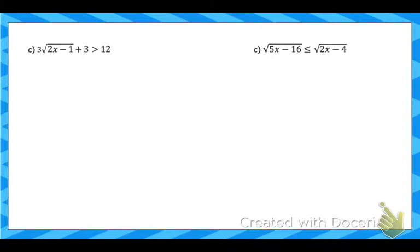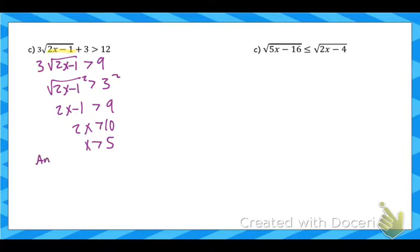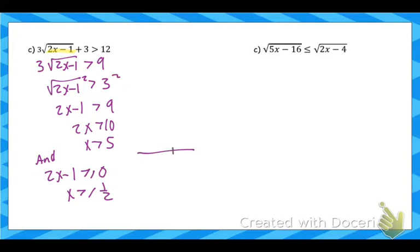Let's try a couple more. Get the square root by itself — note this is 3 times the square root, not a cube root — then square both sides to get the inequality solution. Also find the domain by setting whatever is under the root greater than or equal to 0, giving x greater than or equal to 1/2. If x is greater than 5, it's also automatically greater than 1/2, so the domain is contained within the original solution. On the number line the overlap is everything greater than 5, so the interval notation is (5, infinity).